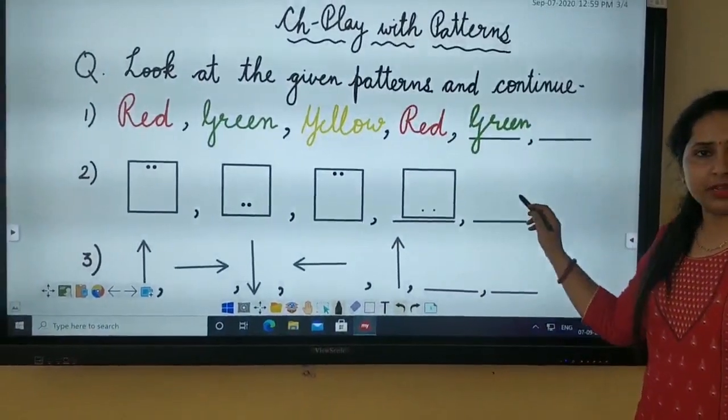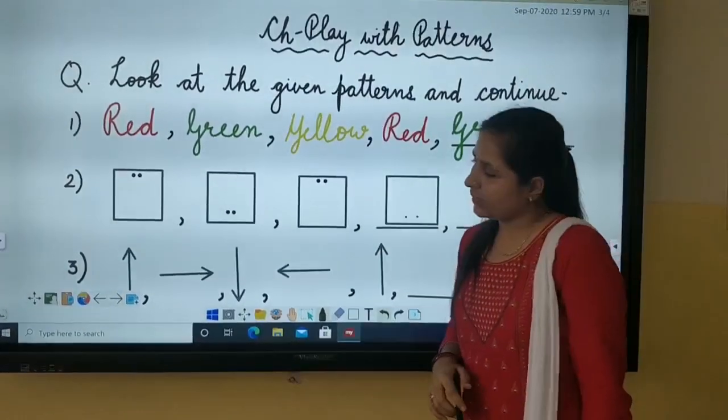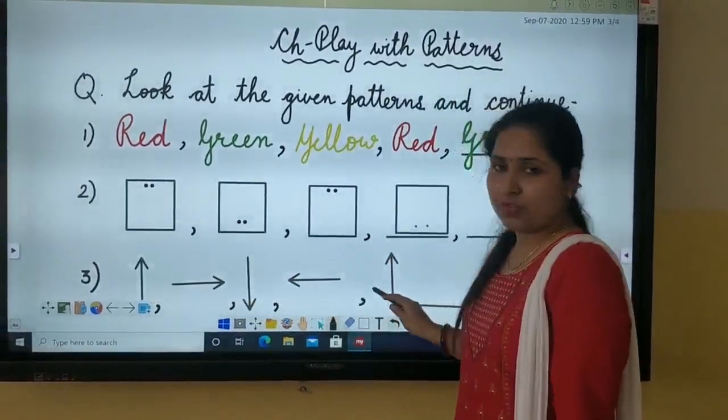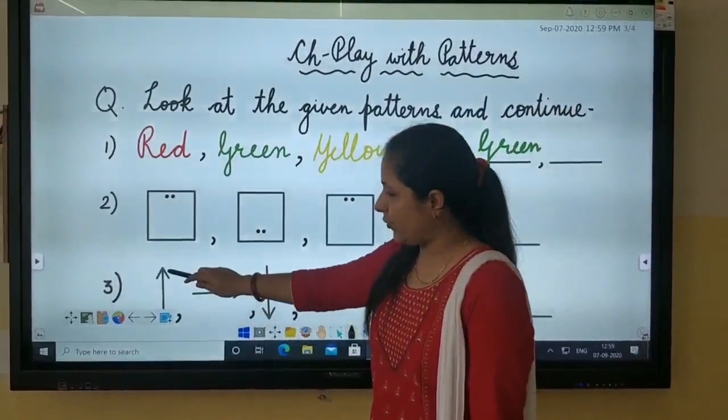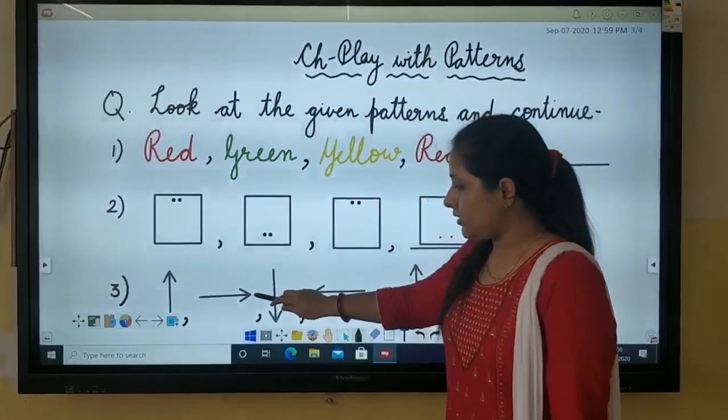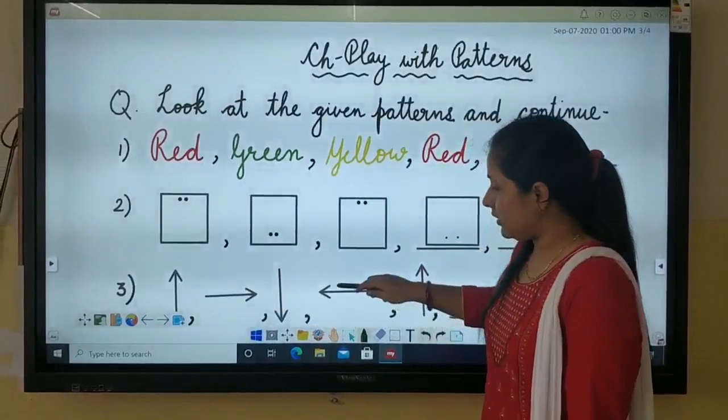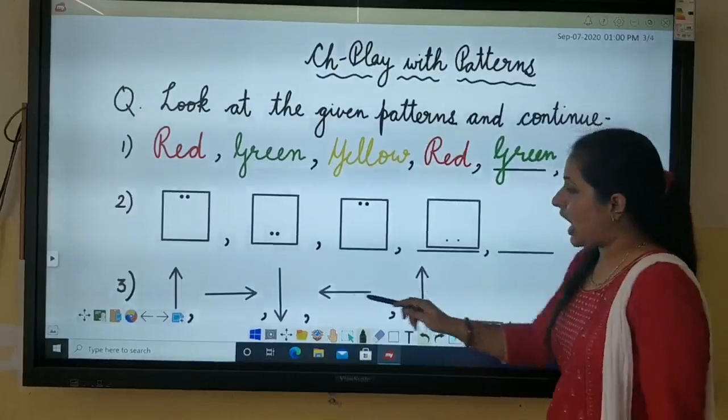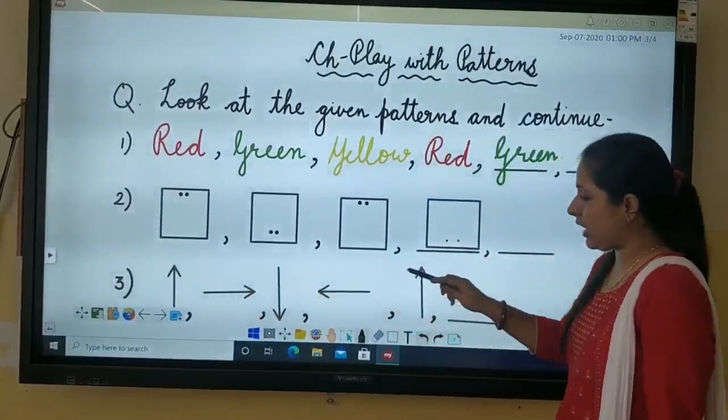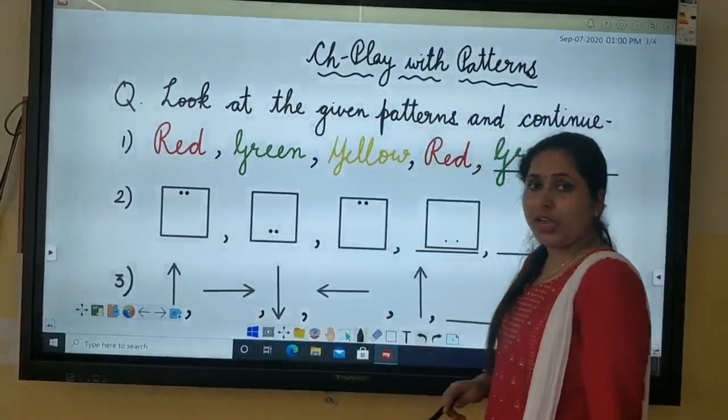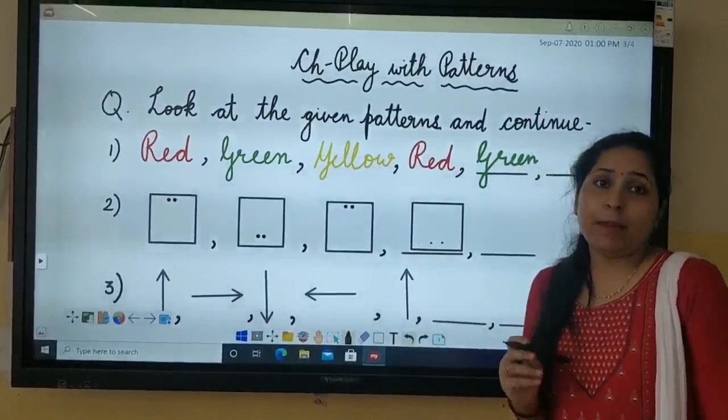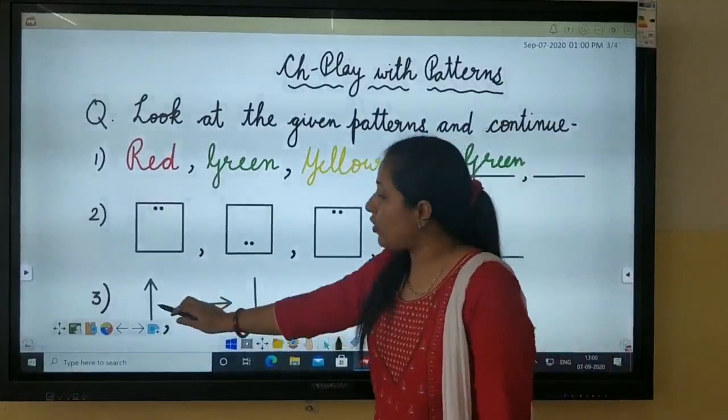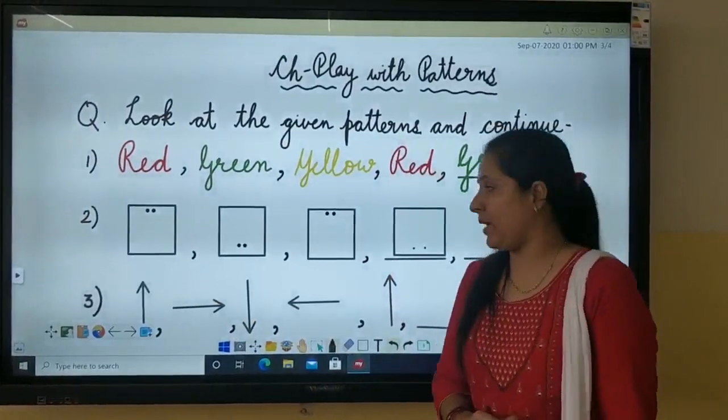Now move to the next one. It is third. Here are a few arrows for you. The first arrow is pointing in upward direction. Then sidewards. Then down. Then this side. Then again upward. So here you can see after these four arrows, again it is same like the first one. So it is also a repeated pattern.